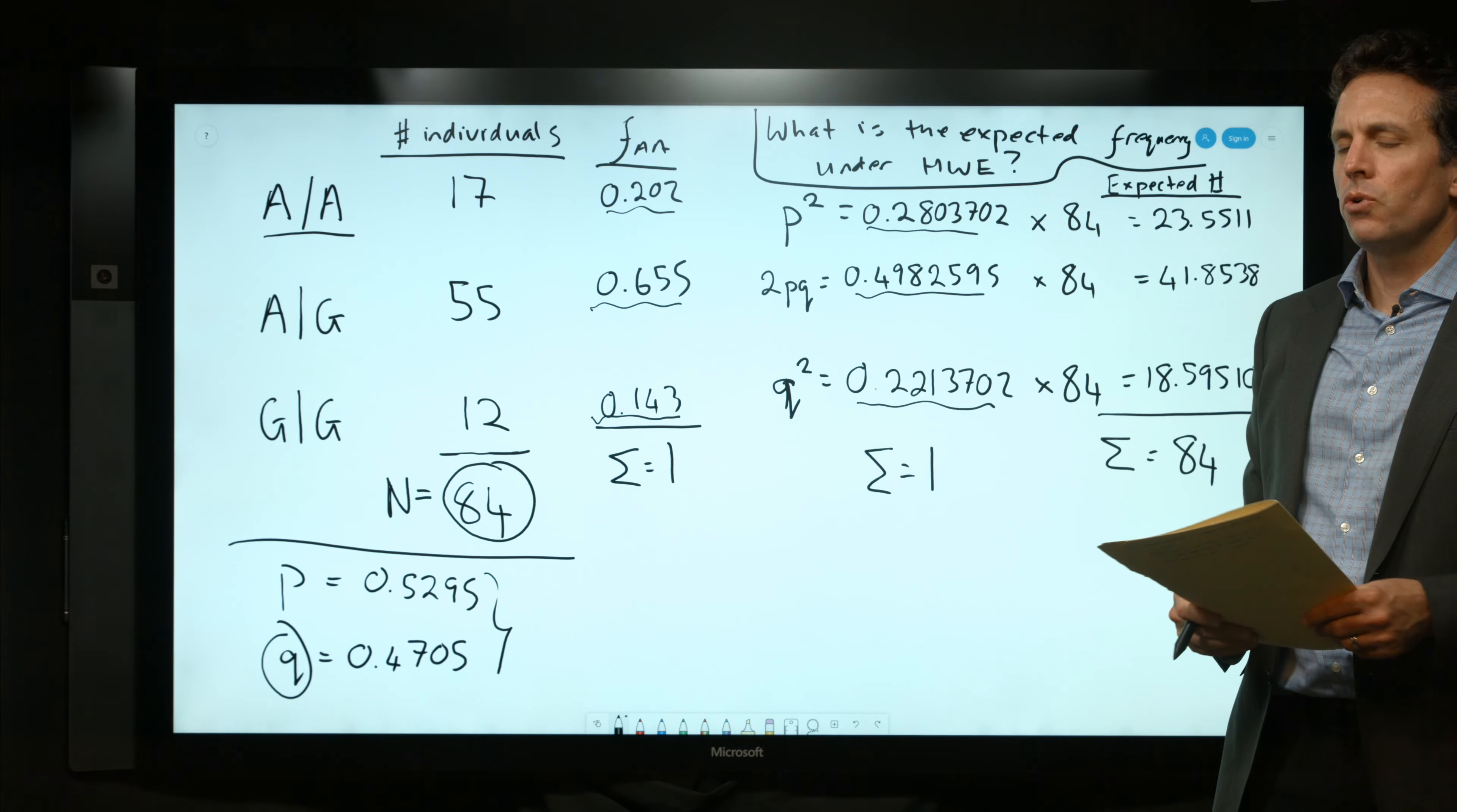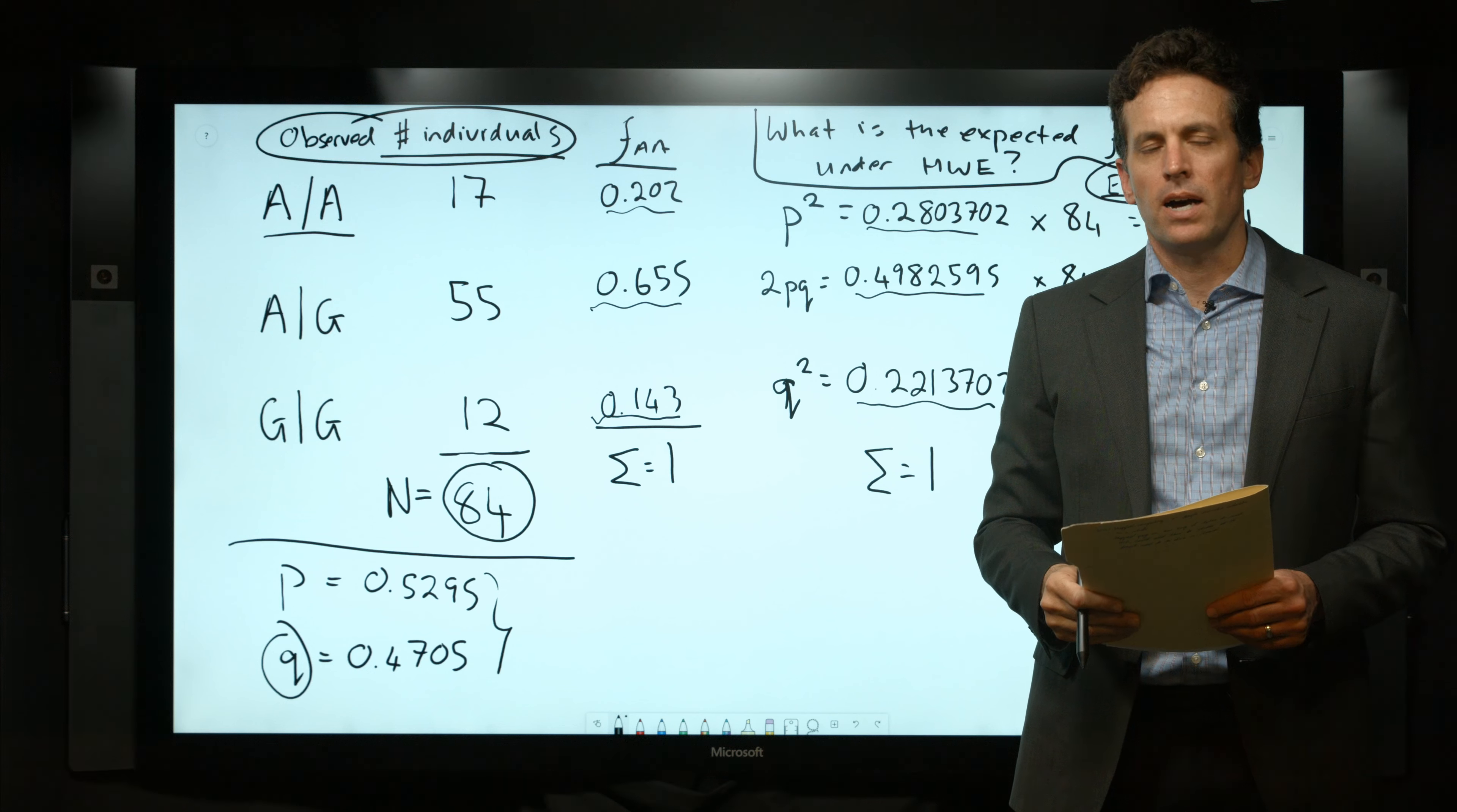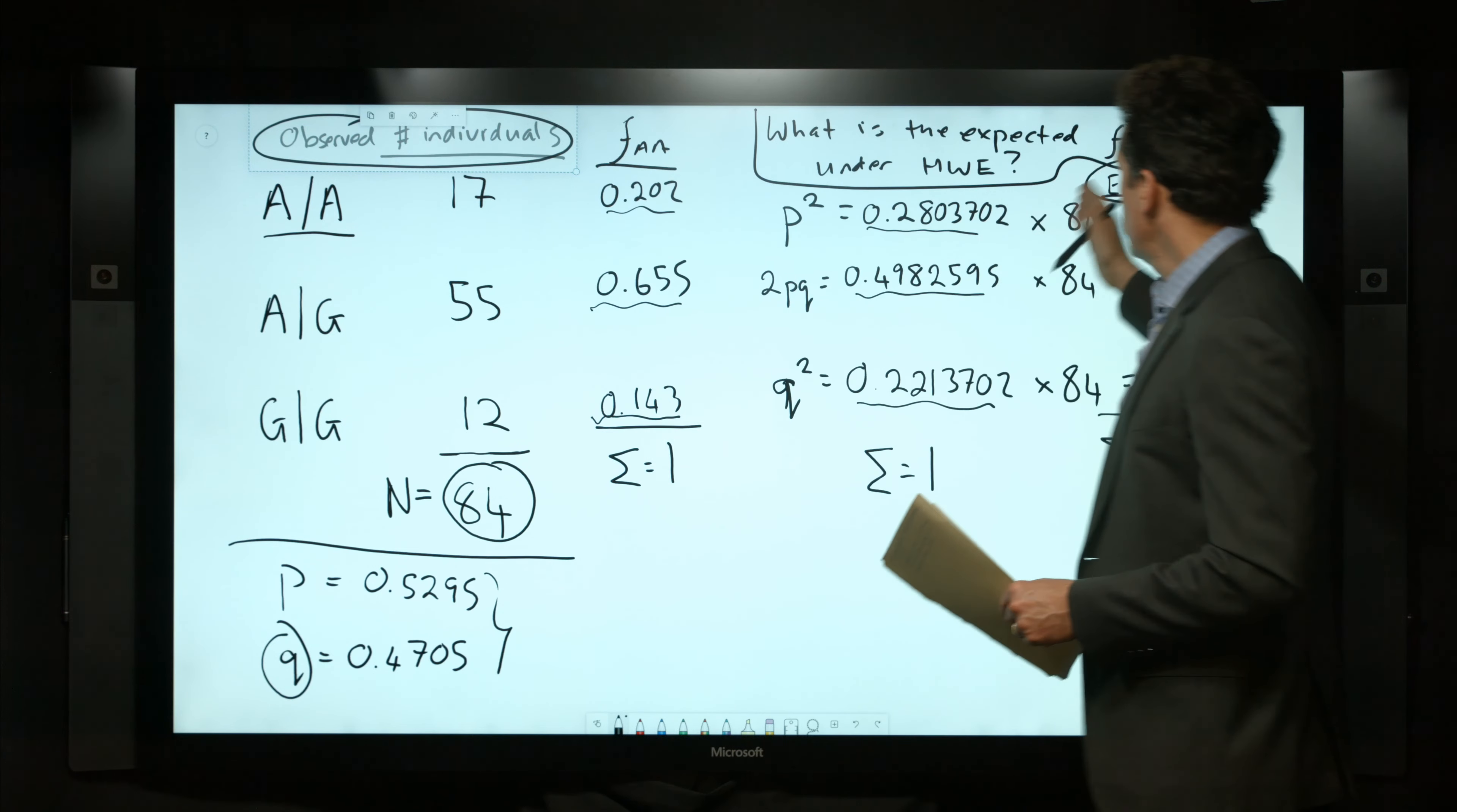We want to test the null hypothesis that this population is in Hardy-Weinberg equilibrium. You might already be thinking how are we going to do that. The big clue here should be that if we have the observed number of individuals and the expected number of individuals, we are of course going to use the chi-square test statistic.